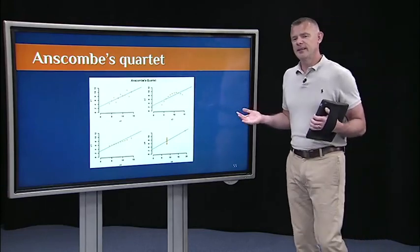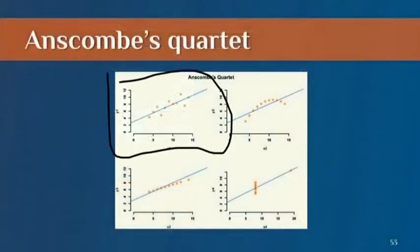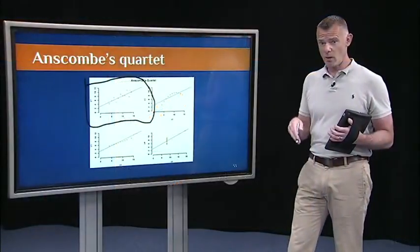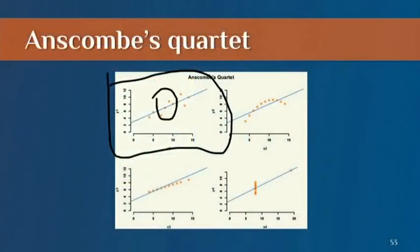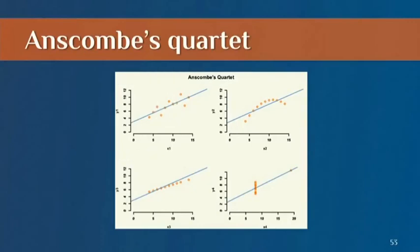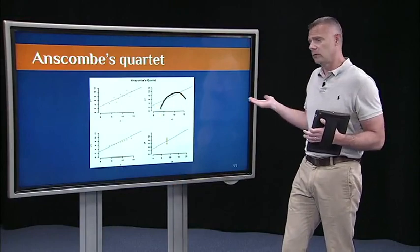But look at the pictures — clearly there are different things going on in each of these four cases. The first one in the upper left satisfies our assumptions: normal distribution in X, normal distribution in Y, a nice linear relationship, and the prediction errors are pretty random across values of X. That's what we want to see. The second one shows not a linear relationship but a quadratic relationship — the values start low, go up, then dip down again at the higher end of X. We wouldn't be able to detect that without looking at the scatter plot.